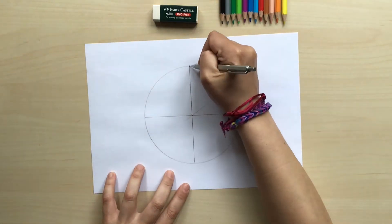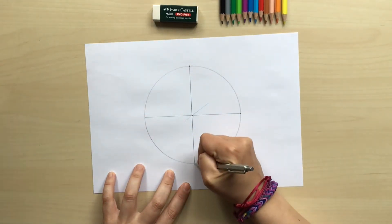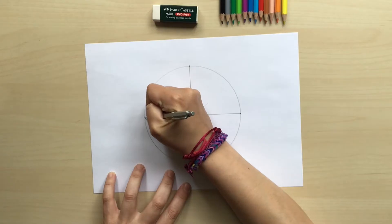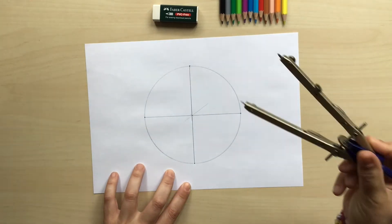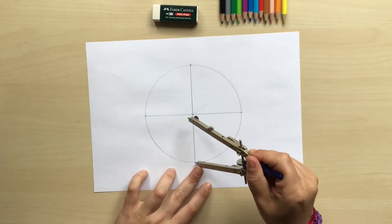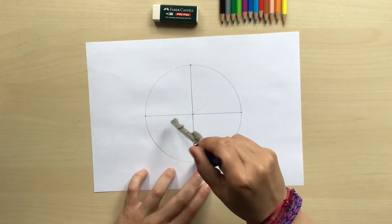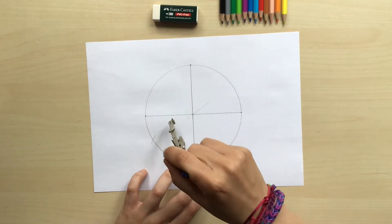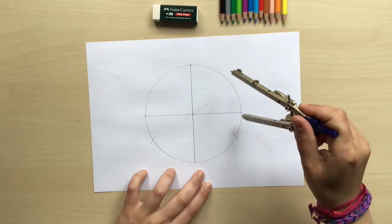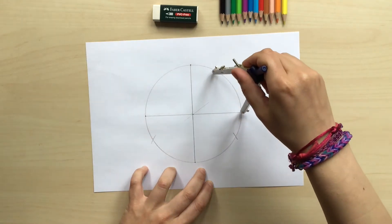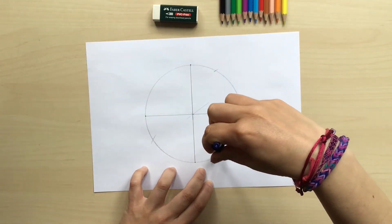So now that I have the two diameters you're gonna see that they meet at four different points of the circle, so I'm gonna grab my compass again and with the size of the radius I'm gonna go over and create two little arcs that meet in the circle just like this.